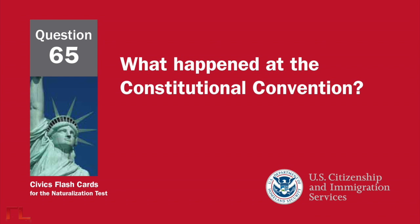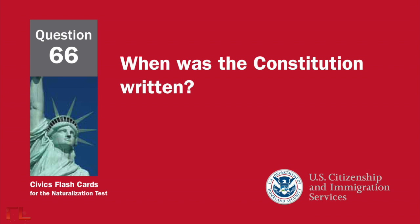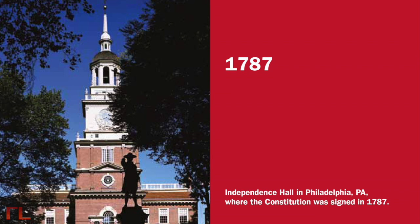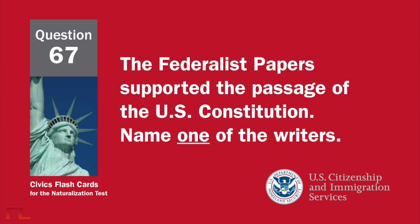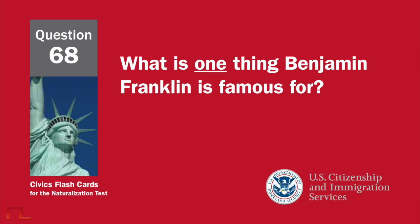What happened at the Constitutional Convention? The Constitution was written; the Founding Fathers wrote the Constitution. When was the Constitution written? 1787. The Federalist Papers supported the passage of the U.S. Constitution. Name one of the writers. James Madison, Alexander Hamilton, John Jay, or Publius.